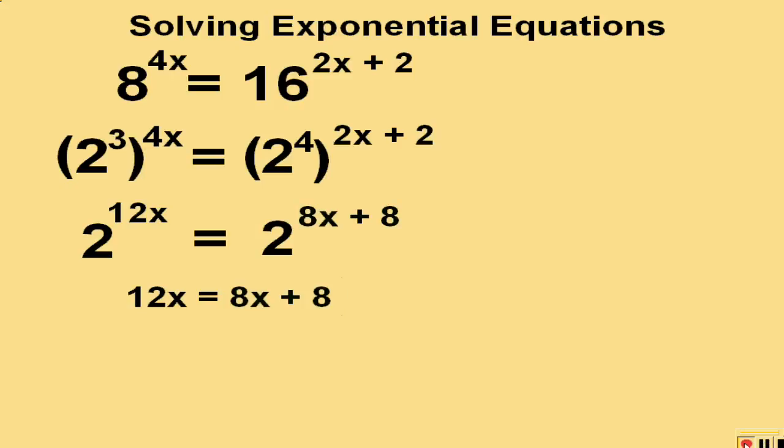We now solve this simple equation by first subtracting 8x on both sides and then getting 4x equals 8. We then divide both sides by 4 and our answer becomes x equals 2.